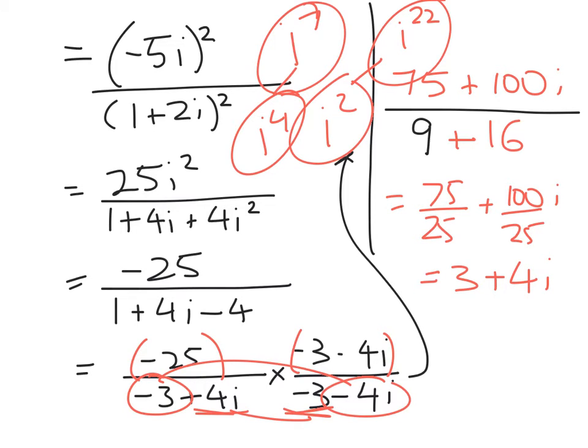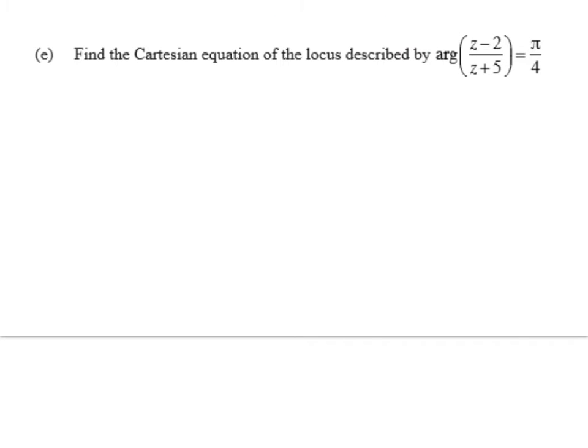Now I'm going to go on to the excellence one, which is a locus problem. Find the Cartesian equation of the locus described by arg z minus 2 over z plus 5 equals pi on 4. So Cartesian equation means write it with x's and y's. A locus is often going to end up giving us a set of points that might form a shape like an ellipse or a circle or maybe something simpler.